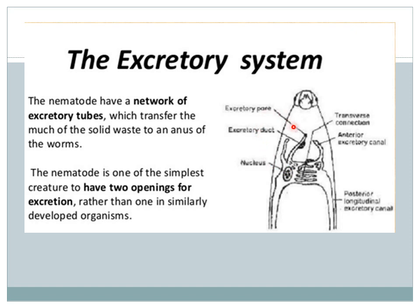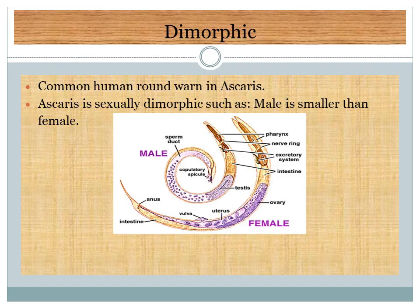Excretory system of Nematodes: the figure shows excretory pores, excretory ducts, nucleus, posterior longitudinal excretory canal, and anterior excretory canal. Nematodes have a network of excretory tubules that transfer solid waste toward the anus. Nematodes are among the simplest creatures to have two openings for the excretory canal — an anterior and a posterior — rather than one, unlike other organisms.